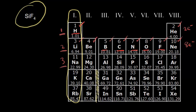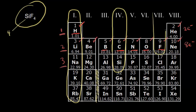Getting back to silicon tetrafluoride: to find the total valence electrons, I find silicon on the periodic table — it's in group four, so one atom of silicon has four valence electrons. Fluorine is in group seven, so each fluorine atom has seven valence electrons. I have four of them, so seven times four gives 28 valence electrons for fluorine. The total is 28 plus 4, so I need to account for 32 valence electrons when drawing this dot structure.